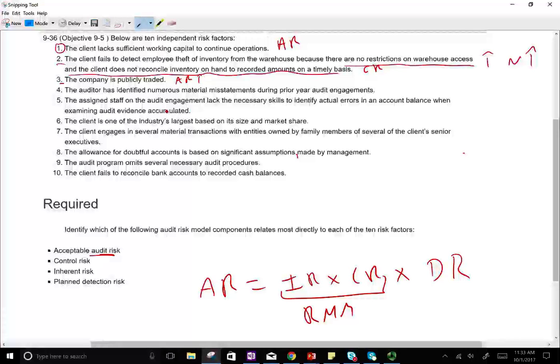Four, the auditor has identified numerous material misstatements during the prior year engagement. We're looking at the prior year engagement and we found many risks. This is an example of inherent risk. Basically, the company is inherently risky.